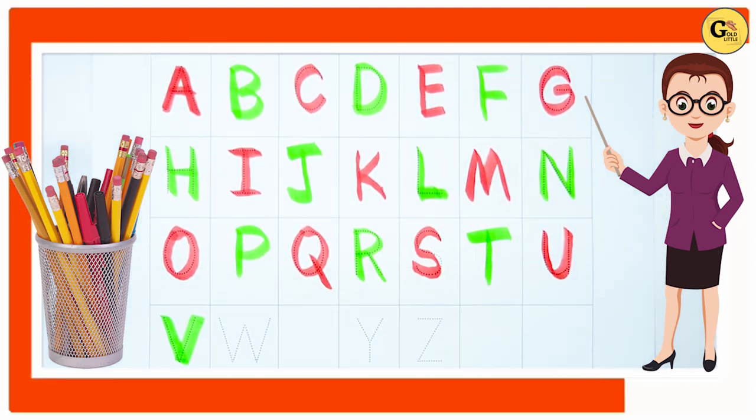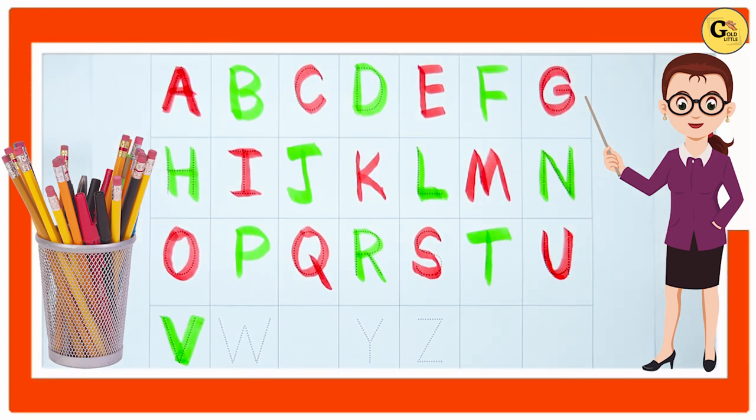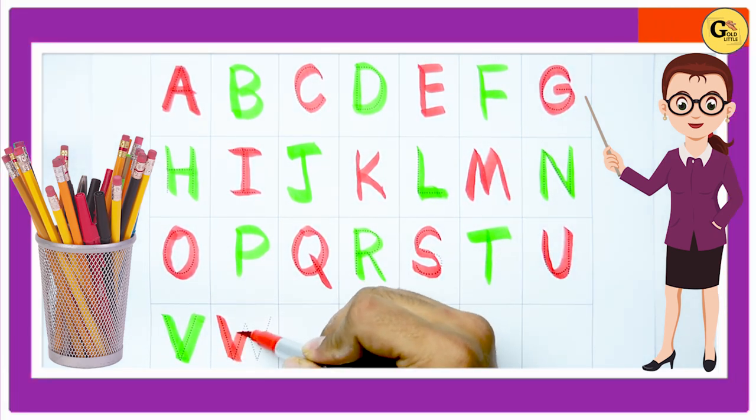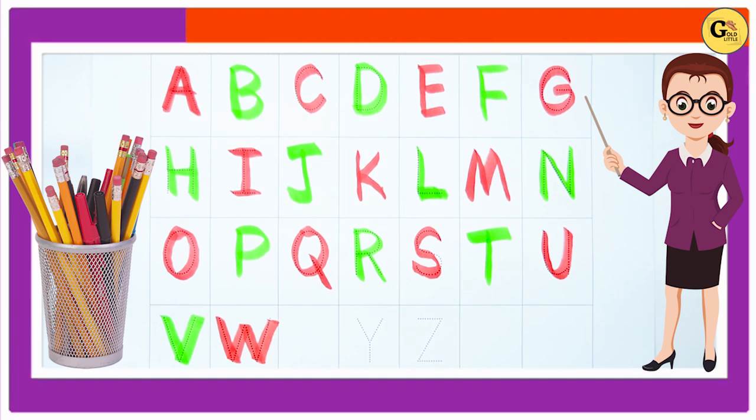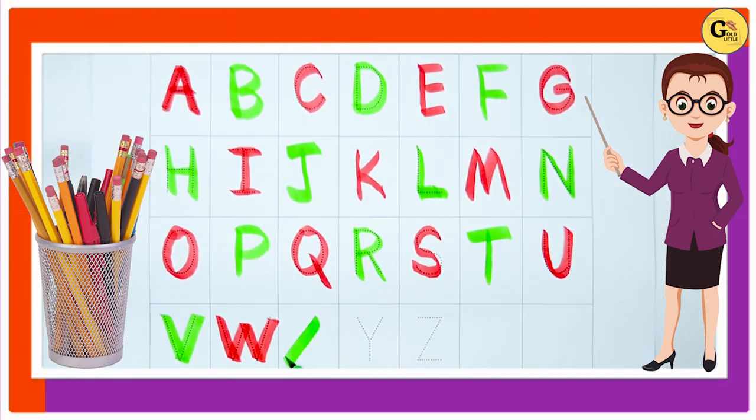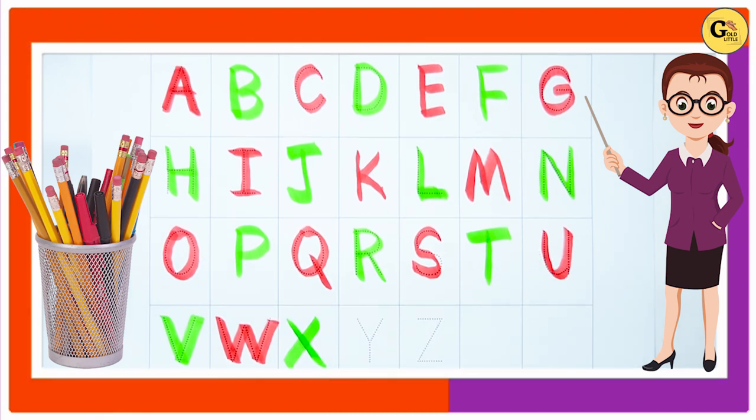After U it's V. V for van. V. W. W for watch. After W, it's X. X for Christmas tree.